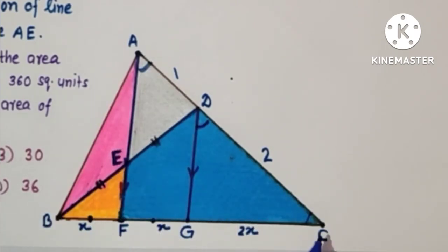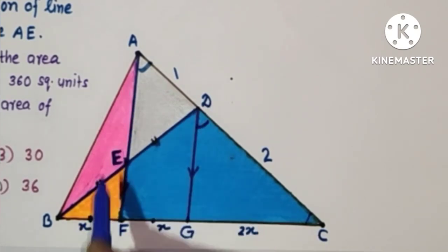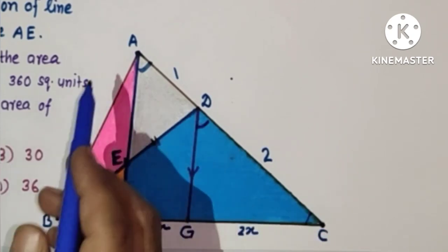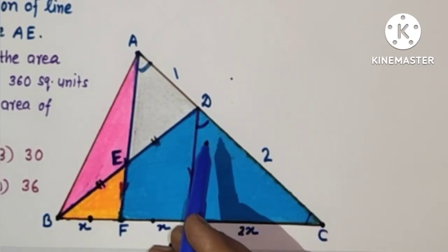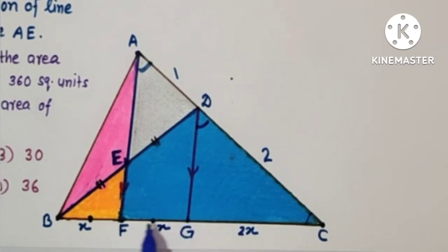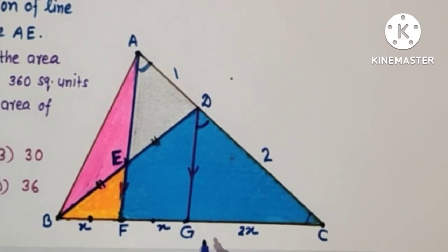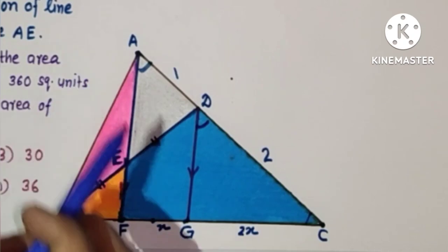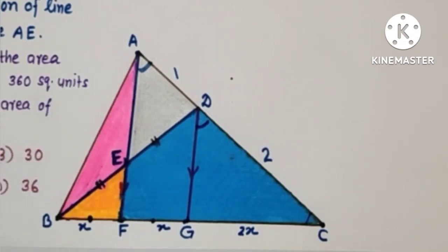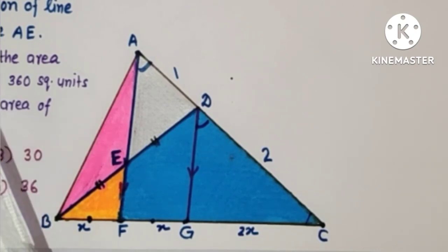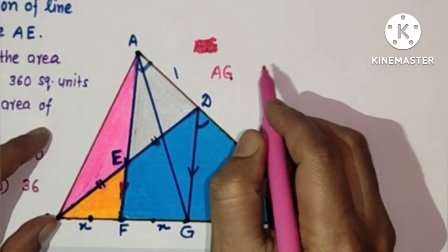So CD to DA is 2 to 1, and since FG was already X, GC will be 2X. So BG is X plus X which is 2X, and GC is 2X. We can say that G is the midpoint of BC. If we join AG, then AG will be the median of triangle ABC. And a median divides the triangle into two triangles of equal area. So join AG — AG is the median.